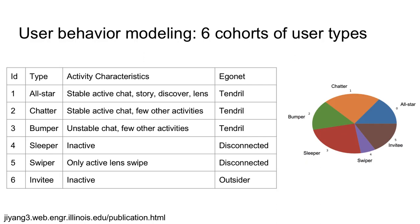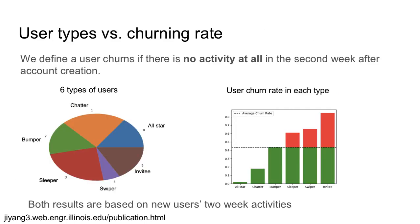Based on a systematic two-step clustering framework, we find there are six cohorts of user types on Snapchat. Each of them has quite different activity characteristics as well as ego network structures. Moreover, we find that the six user types actually correlate a lot with user churn.